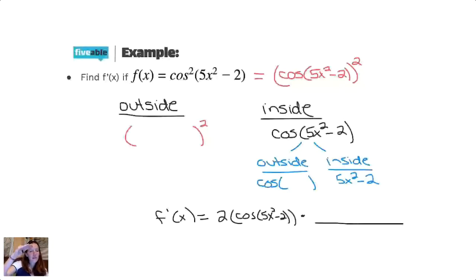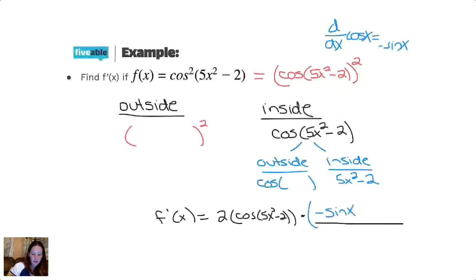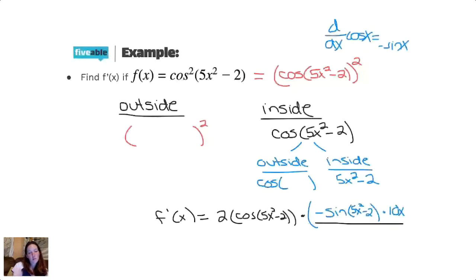In step 1, I did my three steps but couldn't do step 3 yet, so I left a blank. Now I'm going to fill that blank — take the derivative of the outside. The derivative of cosine x is negative sine x. So the derivative of the outside is negative sine of something. Then copy the inside. Cosine of something goes to negative sine of something — copy the inside 5x squared minus 2. And then we multiply by the derivative of the inside function. The derivative of 5x squared minus 2: bring the 2 down, we get 10x. The derivative of minus 2 is just 0, so that goes away.